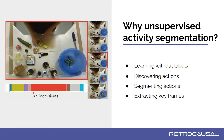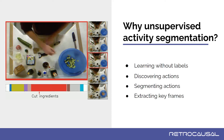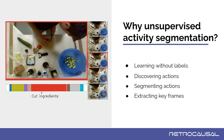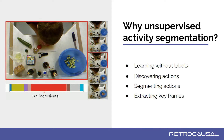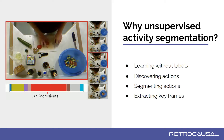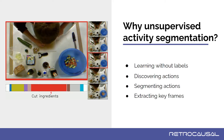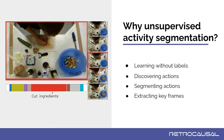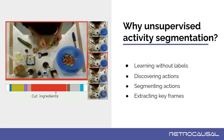Unfortunately, training deep neural networks for visual activity segmentation requires costly frame-wise labels as supervisory signals. Our goal is to train activity segmentation models in an unsupervised manner. These models allow localization of salient actions, autonomous discovery of task structure, as well as video summarization.